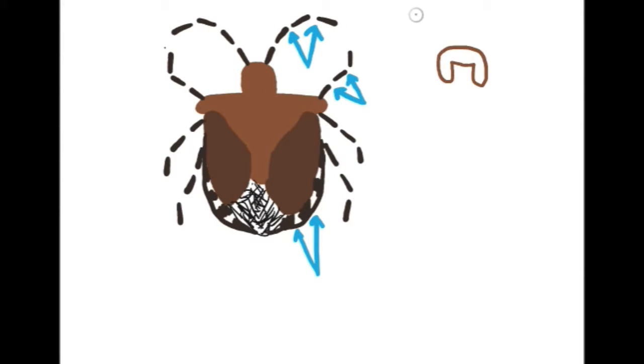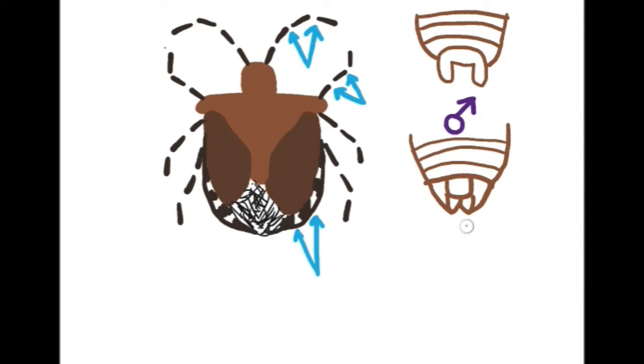You can also easily tell the difference between male and females by looking at the bottom side of the end of the abdomen. This is what a male looks like and this is what a female looks like.